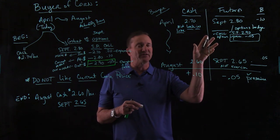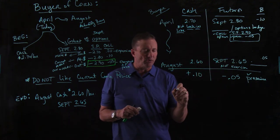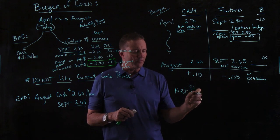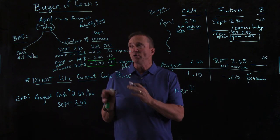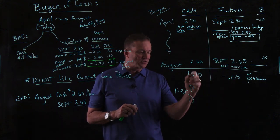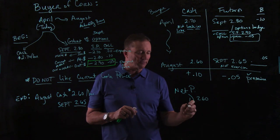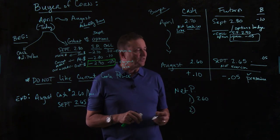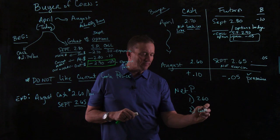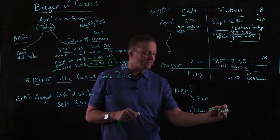We're actually just trying to give ourselves a backup plan, which is the option. So overall, what's the net price that we paid for our corn? Well, one is we paid $2.60 in the cash market, which is great. We still have the futures market — it lost us a premium of $0.05.